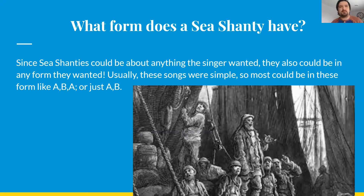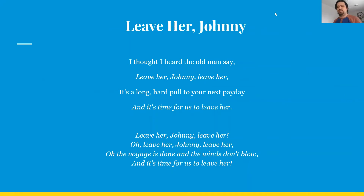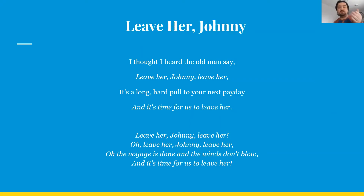We're going to look at one of my favorite sea shanties right now — it's been going around and I've been hearing it a lot more. It's called Leave Her, Johnny. So really quick, we're just going to say the words — we'll have other people sing them in a second. I'll sing a line, then you sing a line. Here we go: I thought I heard the old man say — Leave Her, Johnny, Leave Her. It's a long, hard pull to your next payday — and it's time for us to leave her. Leave Her, Johnny, Leave Her. Oh, Leave Her, Johnny, Leave Her. The voyage is done and the winds don't blow — and it's time for us to leave her.